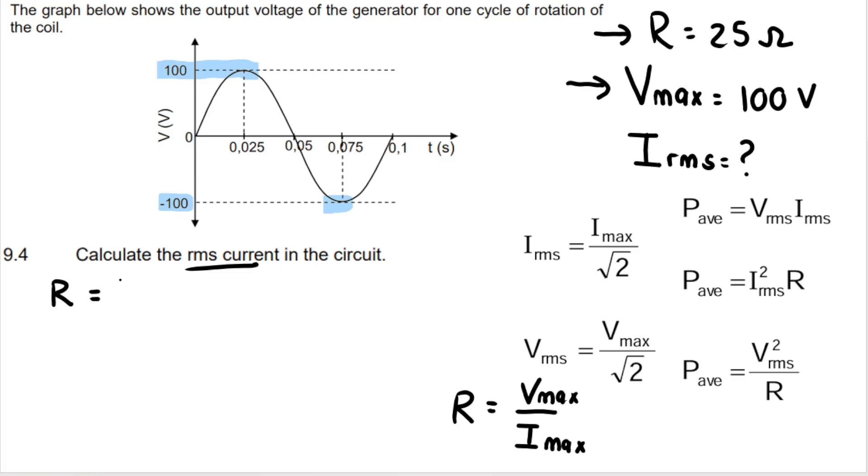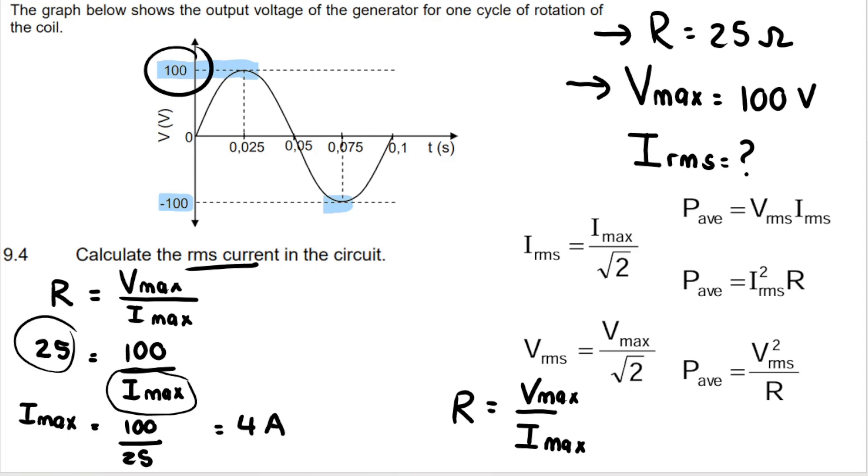So if I write R is equal to Vmax divided by Imax, I can substitute in the following. I know that my resistance is 25. I know my Vmax is 100. I'm looking for Imax, the maximum current. Remember if your variable that you're looking for is at the bottom of the fraction. So here it is, it swaps places with that one. So Imax is equal to a hundred divided by 25, which is equal to four amperes. Now take a look.